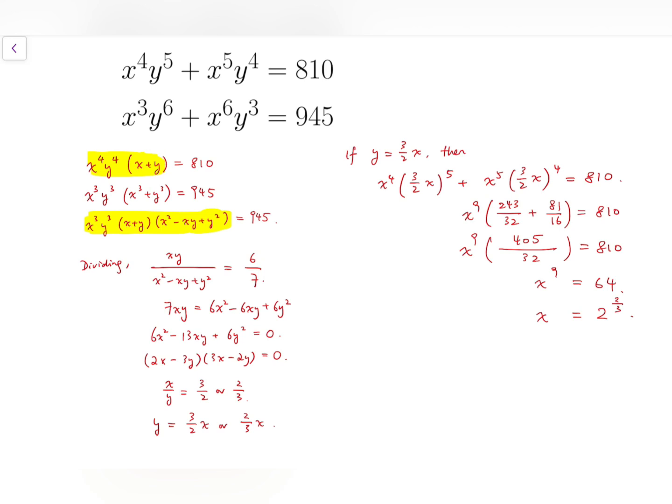And so therefore, in this case, y equals 3 over 2 times 2 to the power 2 thirds, which gives us 3 times 2 to the power minus 1 third. And so that's the solution for y.